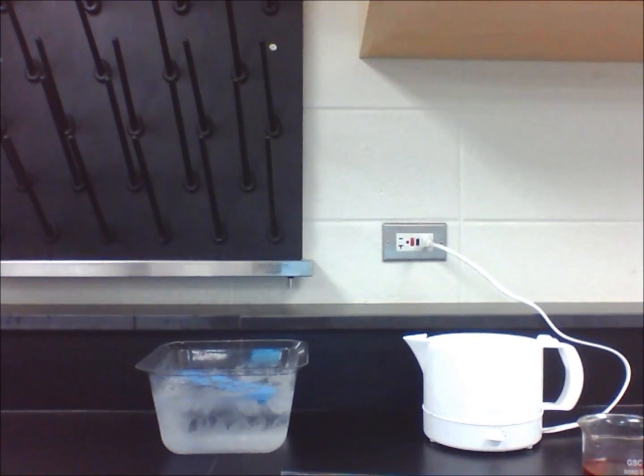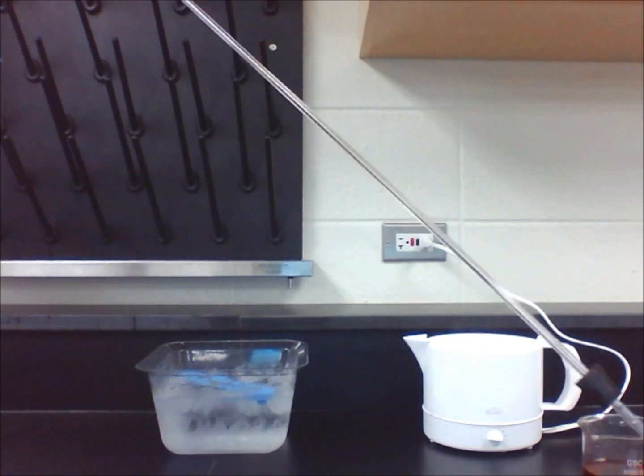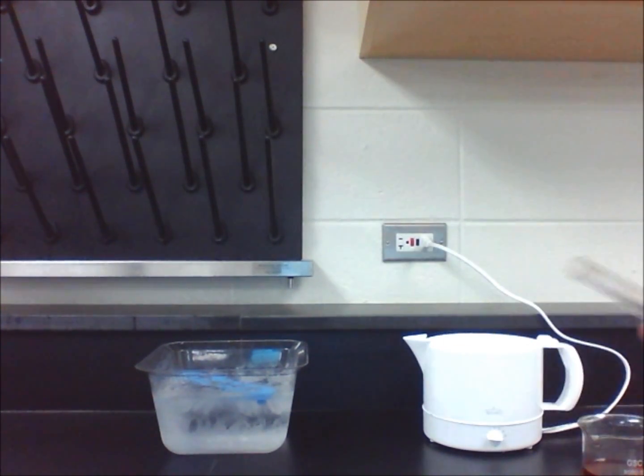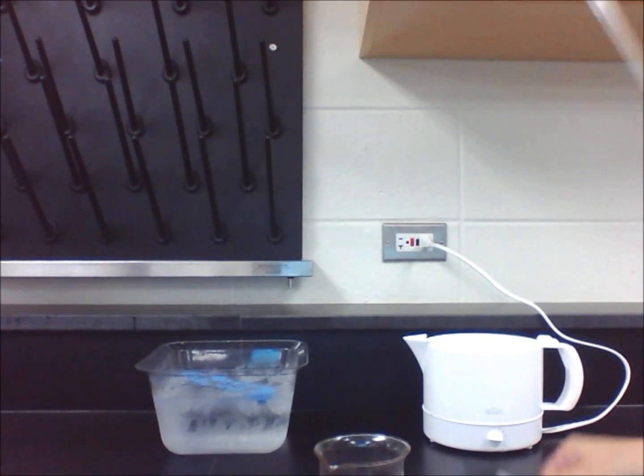All we need to construct a simple yet functional thermometer are a piece of plastic tubing mounted in a stopper, a test tube, colored water, permanent marker, and a metric ruler.